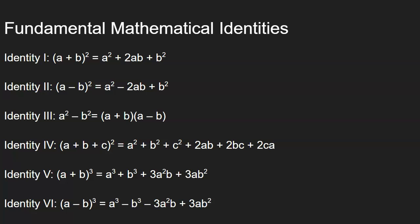Next are the fundamental mathematical identities. These 6 identities - never forget these identities. Very important. No matter which aptitude test you are attempting, you need to know these fundamental mathematical identities. So first is (a + b)² = a² + 2ab + b². (a - b)² = a² - 2ab + b². a² - b² = (a + b)(a - b).